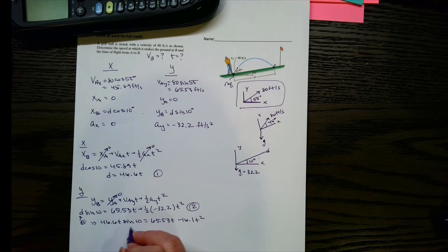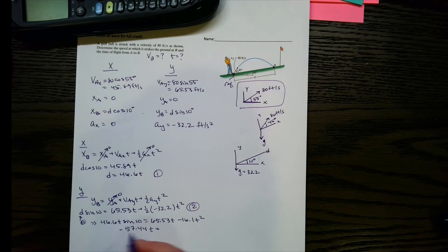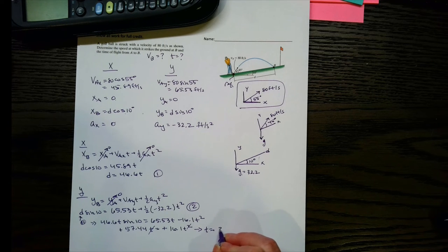Alright, so let's simplify this. So we get 57.44 t, and that's going to equal, actually this is negative, that's going to equal negative 16.1 t squared. So basically I took this, moved it over, combined them, we end up with this negative. This switches to positive, and this t cancels one of these. So now you can solve for t, and you get 3.57 seconds.